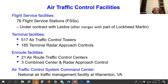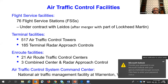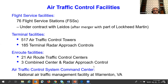Different types of ATC facilities include: 76 flight service stations (under contract with Leidos, previously Lockheed Martin) providing weather information and flight plan filing; 517 air traffic control towers; 185 terminal radar approach controls (TRACONs) for terminal area traffic; 21 air route traffic control centers (ARTCCs) and three combined center and radar approach controls (CRAPs) for en route operations; and one Air Traffic Control System Command Center, located in Warrenton, Virginia.